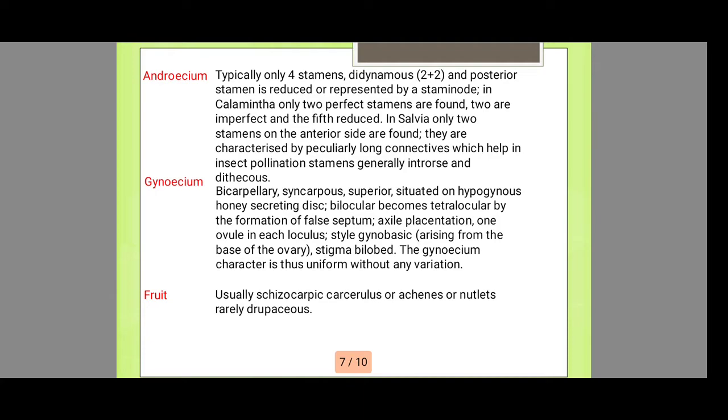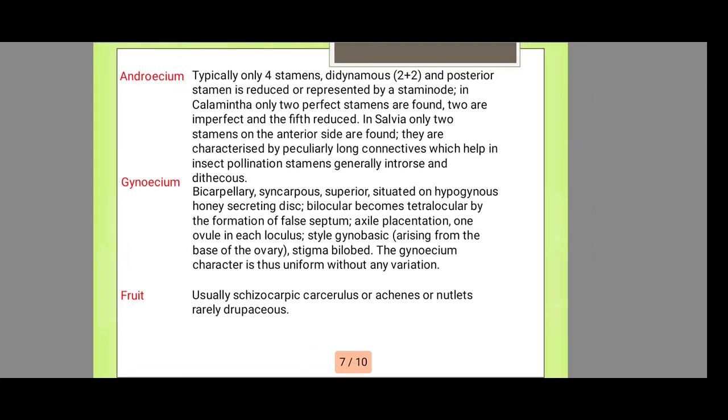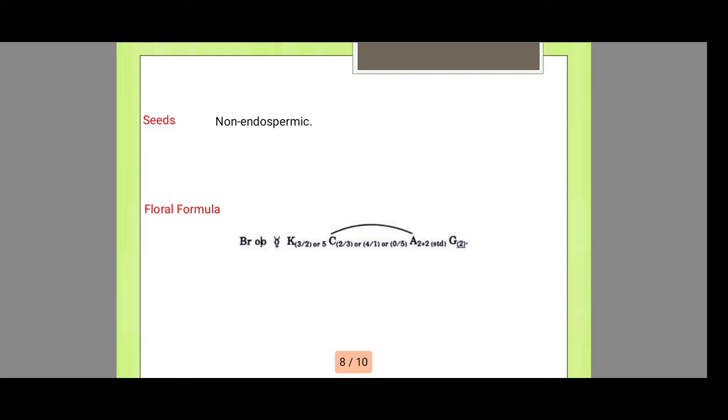These are the kinds of fruit found in this family. Usually the fruit is an achene and rarely a drupe. The seeds are non-endospermic. This is the floral formula of this family's plants.